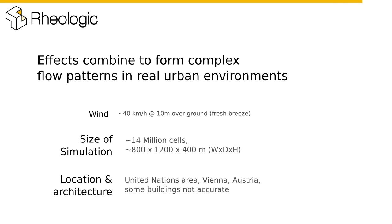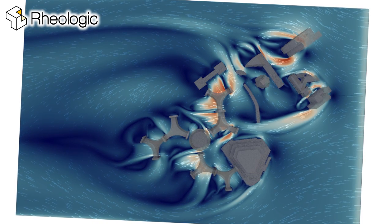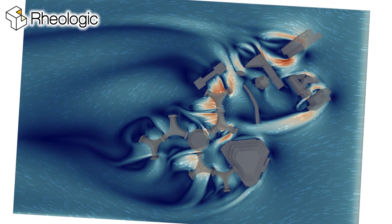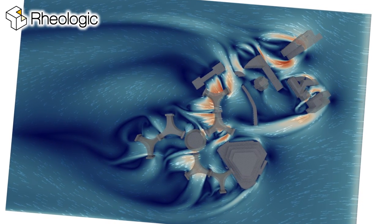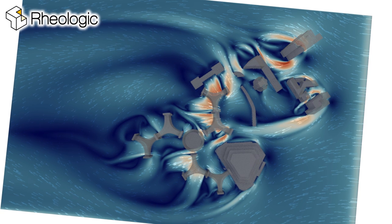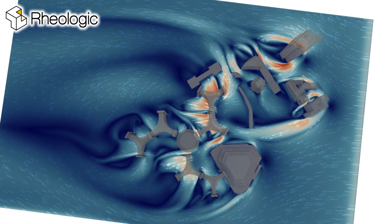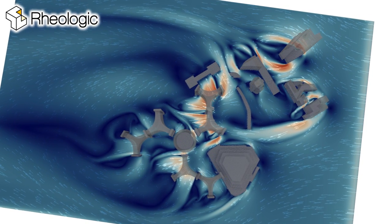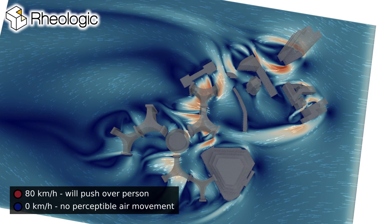The following images are results from one of our CFD simulations. The colored plane shows the flow at a height of two meters above ground. Color indicates wind speed.